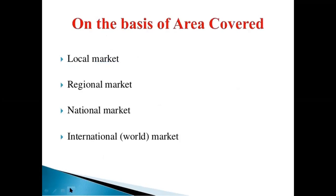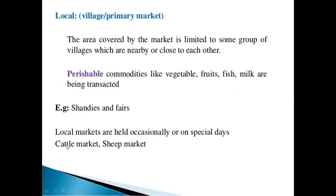On the basis of area covered, there are four types: local market, regional market, national market, and international market. The local market, also called the village or primary market, covers an area limited to a group of nearby villages. Perishable commodities like vegetables, fruits, fish, and milk are transacted. Local markets may also be held on a specific day, such as the cattle market or sheep market.